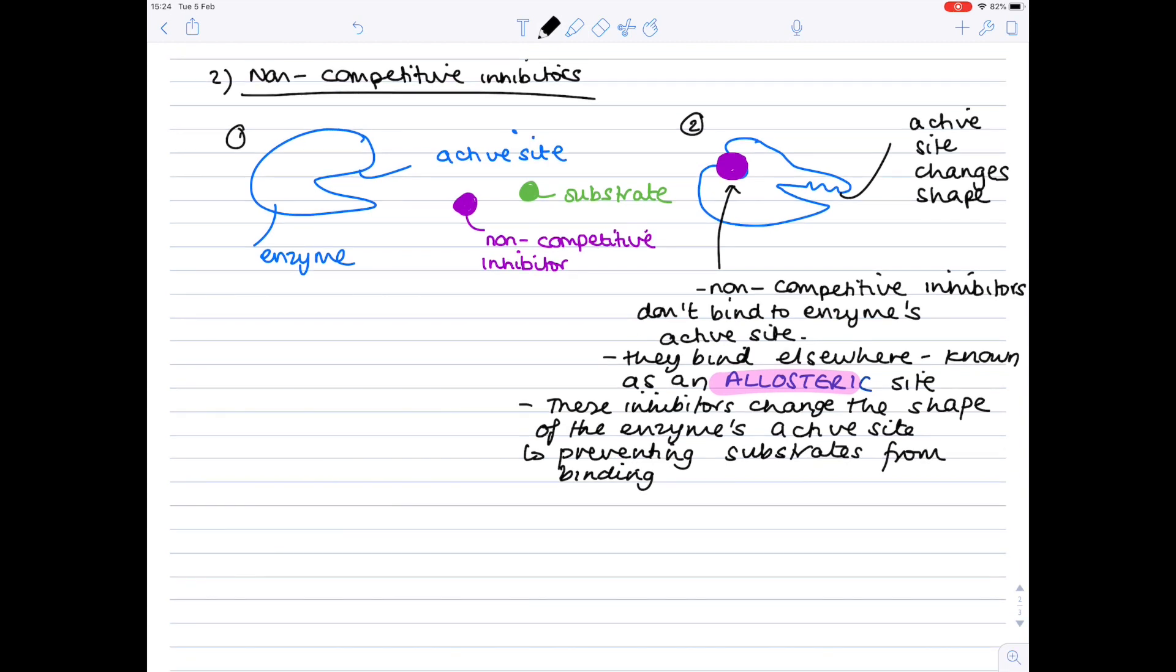The crucial thing with non-competitive inhibitors is that there is no point in trying to increase the substrate concentration in order to out-compete the inhibitor. Because once this non-competitive inhibitor is bound to an allosteric site on the enzyme, effectively the active site has changed shape. So there's no point trying to add more substrate molecules because they still won't be able to bind. And therefore, you often find that non-competitive inhibition is permanent.